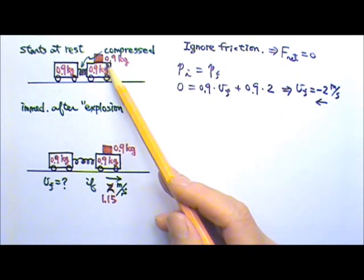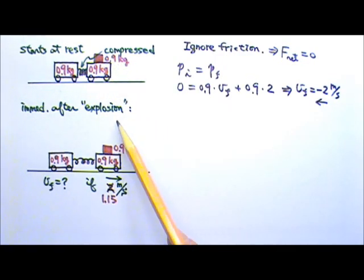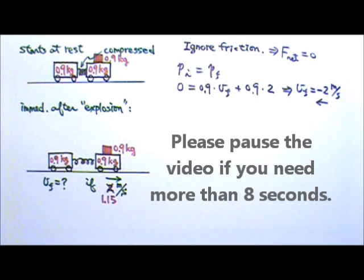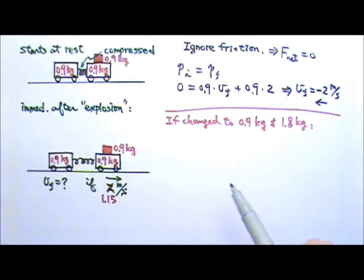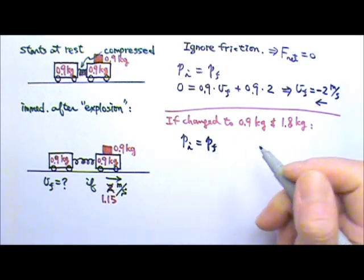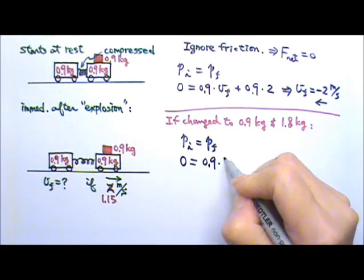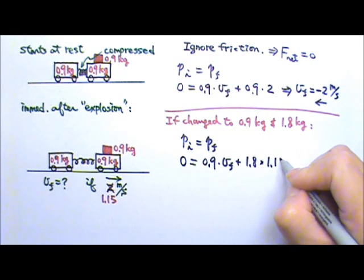Now, if I add a 0.9 kg weight to the top of this cart, you can probably imagine that this heavier cart will now go off at a slower speed after the explosion. Let's say it now moves off to the right at 1.15 m per second. What would the velocity of the other cart be immediately after the spring becomes relaxed? Again, if we ignore friction, that means the net force on the whole system is zero. So we have conservation of momentum. Initially, everything is at rest, so the total momentum is zero. Afterwards, the 0.9 kg has a velocity Vf we do not know. And this 1.8 kg together, they are moving at 1.15 m per second.